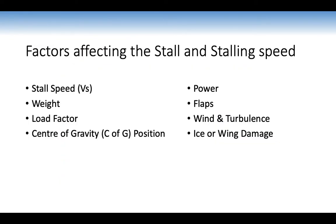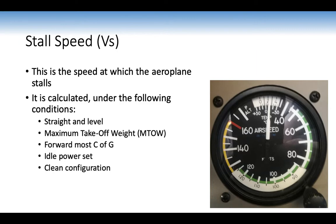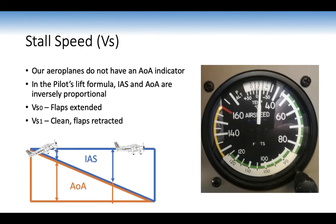Now we'll look at the factors affecting the stall and stalling speed: weight, load factor, centre of gravity, power, flaps, wind and turbulence, and ice or wing damage. Stall speed is the speed at which the aeroplane stalls — at this speed the stalling angle of attack of 16 degrees is required to fly. It is calculated under the following conditions: straight level flight, maximum takeoff weight, forward-most centre of gravity, idle power, and clean configuration. These factors represent the worst case scenario. Our aeroplanes don't have an angle of attack indicator, but we have the next best thing — the airspeed indicator. Indicated airspeed and angle of attack are inversely proportional.